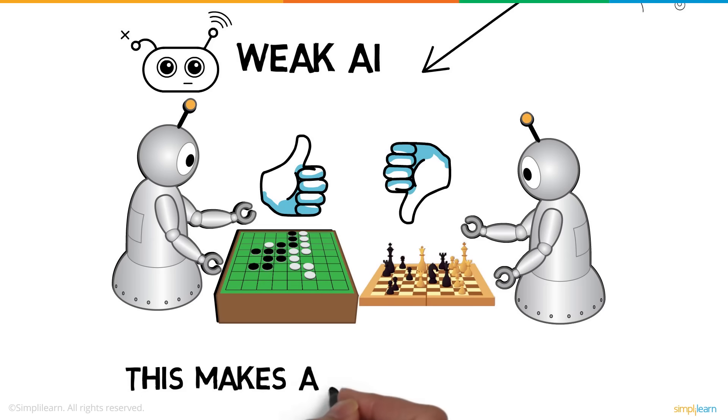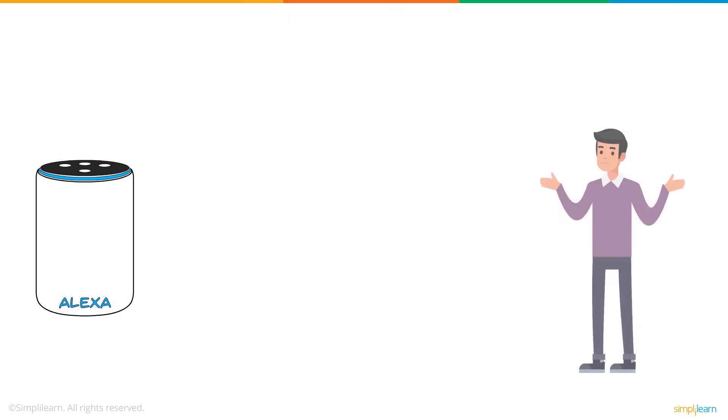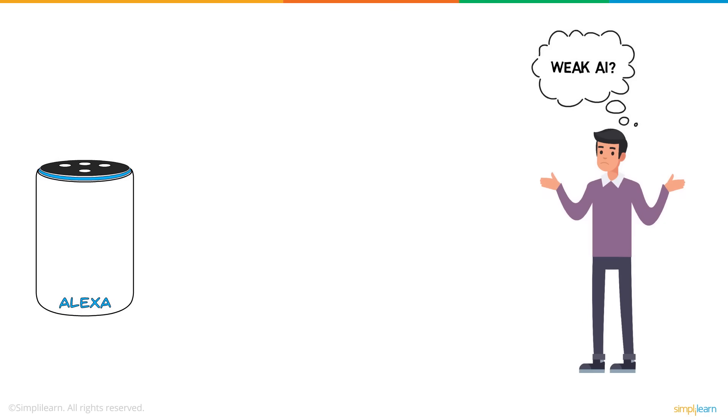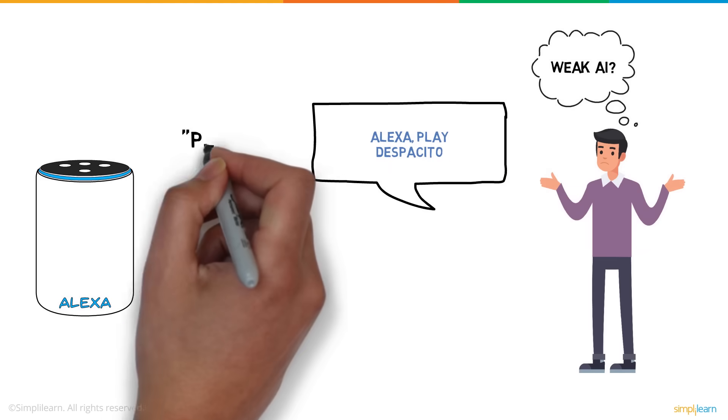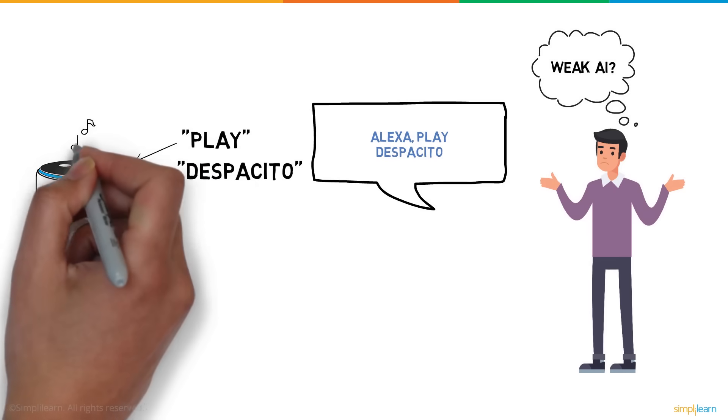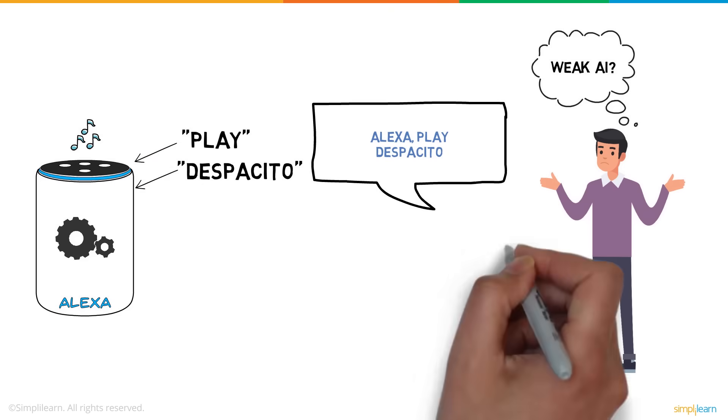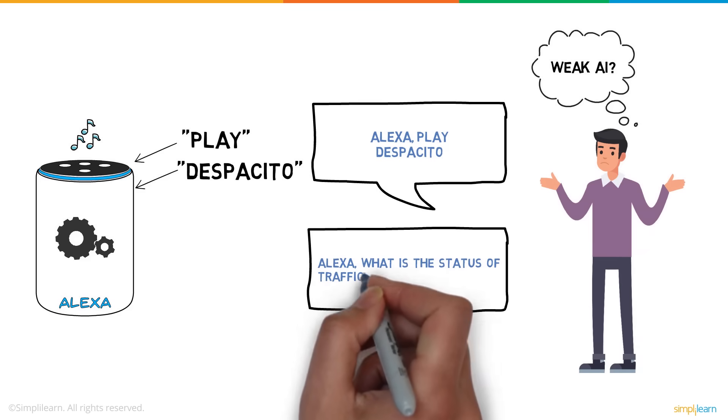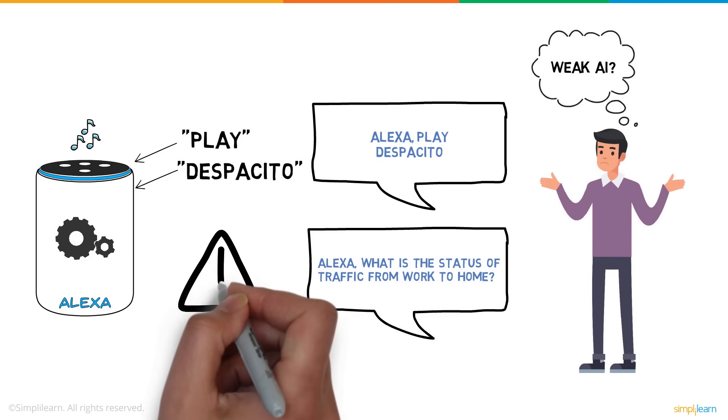You might say Alexa is definitely not a weak AI, since it can perform multiple tasks. Well, that's not really true. When you ask Alexa to play Despacito, it picks up the keywords play and Despacito and runs a program it is trained to. Alexa cannot respond to a question it isn't trained to answer. For instance, try asking Alexa the status of traffic from work to home. Alexa cannot provide you this information, as she is not trained to.